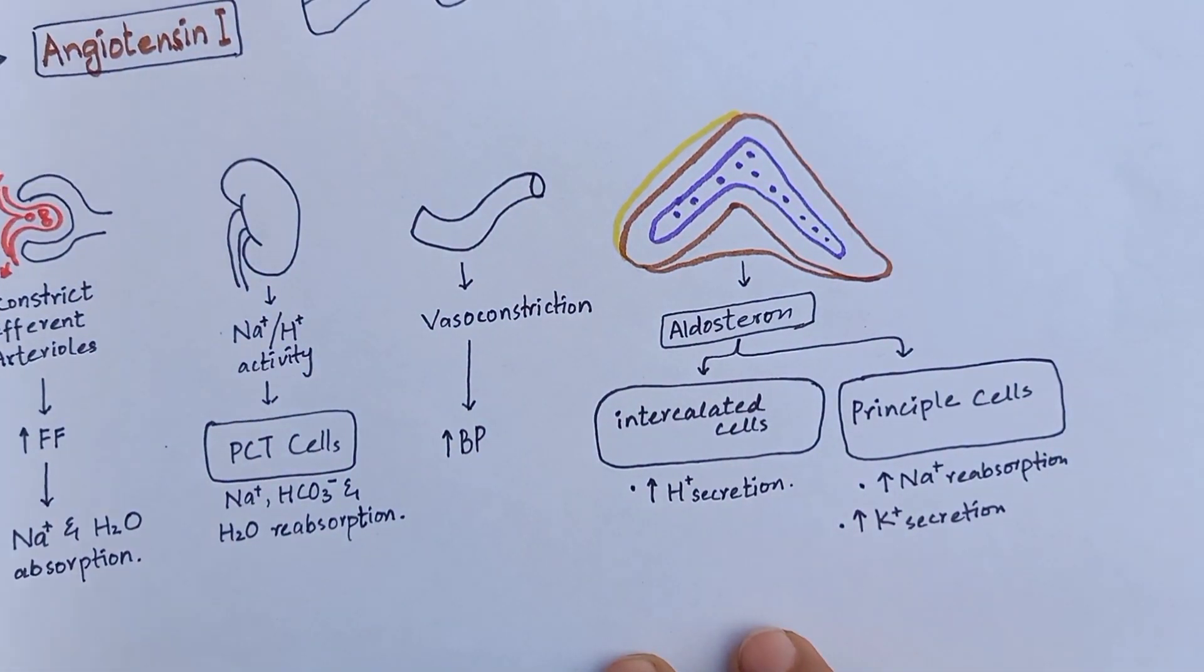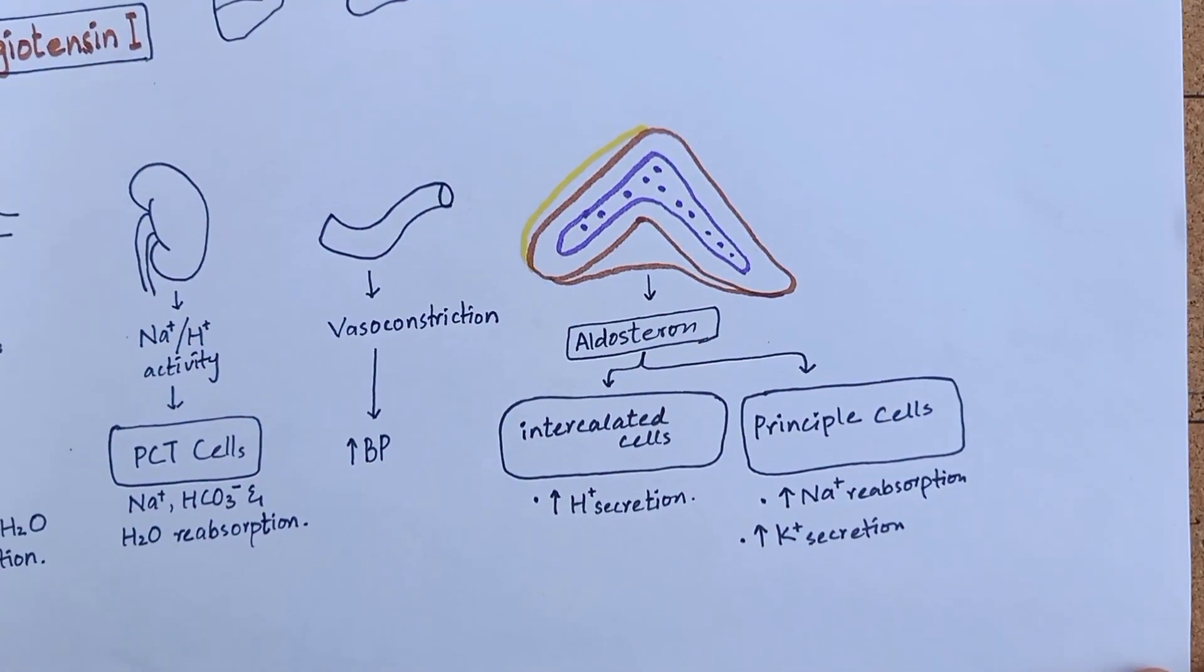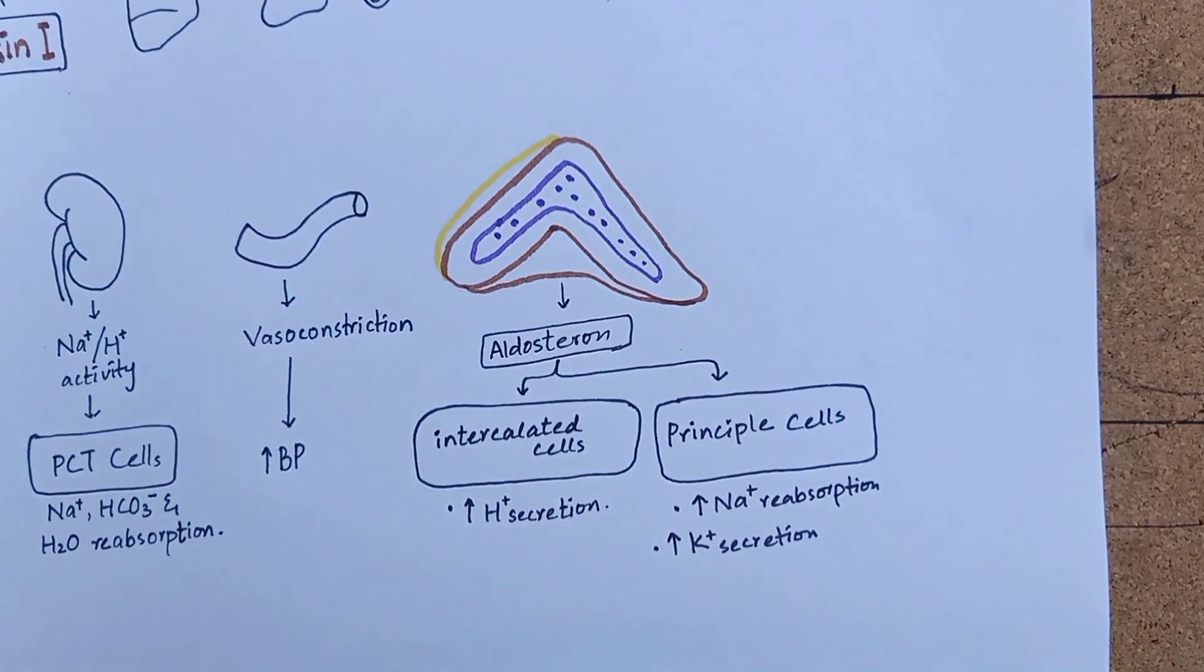Angiotensin 2 triggers adrenal glands to secrete aldosterone. We have already discussed aldosterone in the beginning.